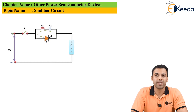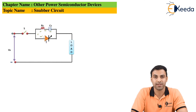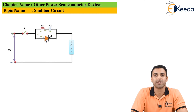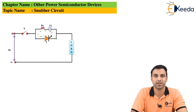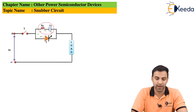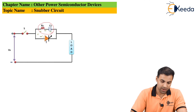Let's see in this video how we can protect a thyristor against dv/dt triggering. The most popular circuit used to protect the thyristor from dv/dt triggering is a snubber circuit.